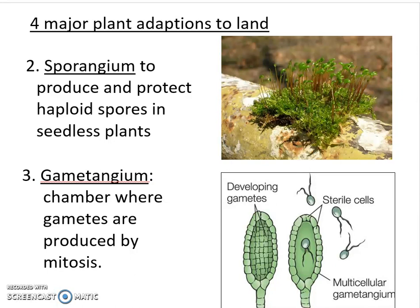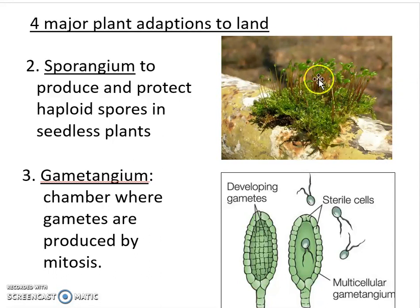When going on to land, you're going to be in a dry environment, so you have to find some way to protect the cells being produced. The algae remodeled their existing structures into what we see in plants. One of those is what's referred to as a sporangium — these little green structures that produce a sac protecting your haploid spores. Another is what's known as a gametangium, a chamber where gametes are produced via mitosis — a specialized structure where you can protect those cells.